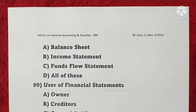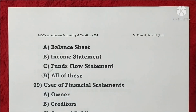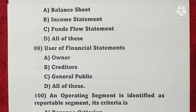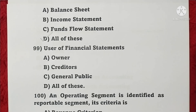Question 98: Financial statements include balance sheet, income statement, and fund flow statement — all of these, so option D is correct. Question 99: Users of financial statements include owners, creditors, and the general public — all of these, so option D is correct.